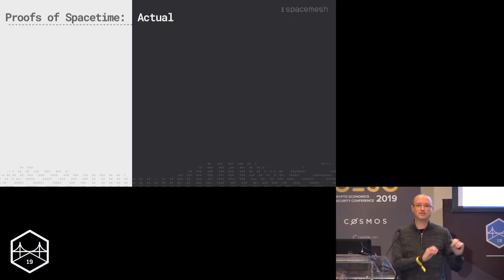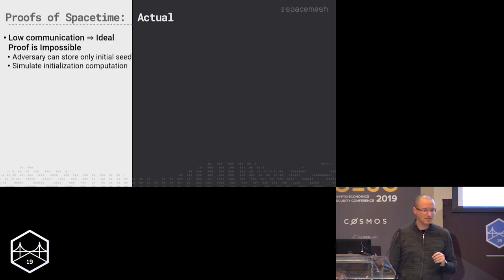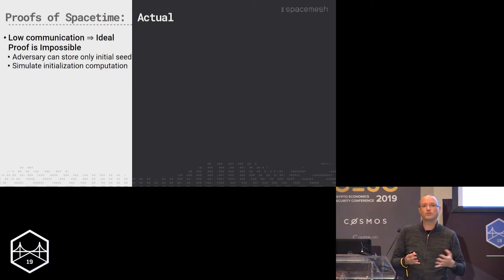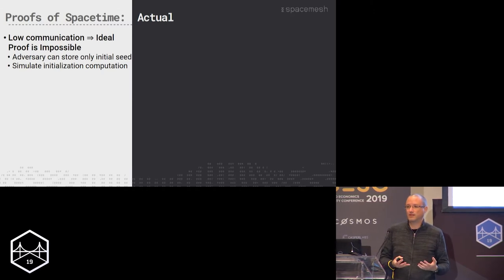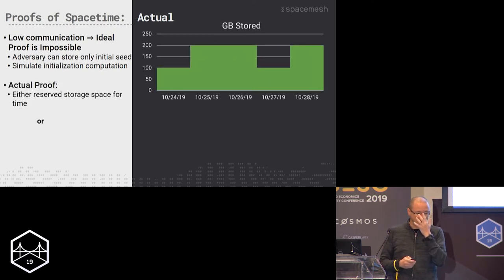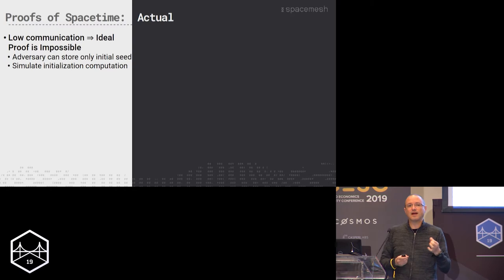Unfortunately, we can't actually get this exact definition — it's simply unattainable. If we don't require you to get data from somewhere else or send all your data out, if everything is local, then there's always an alternative. In the initialization phase you start with no data and fill your disk — so why actually have to store anything? You can just store a tiny initial random seed. Then when asked to prove you're still storing it, you can just recreate the exact same data. So there's always an attacker that can just recreate the data whenever needed without storing anything.